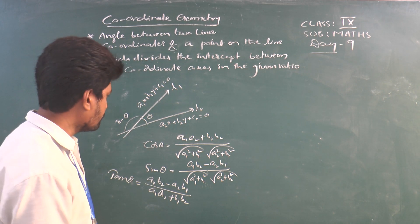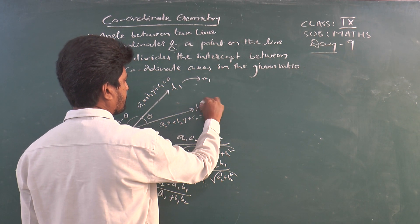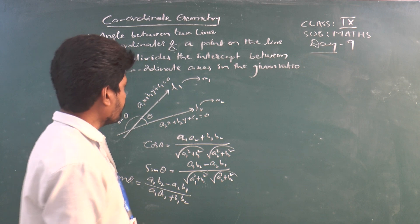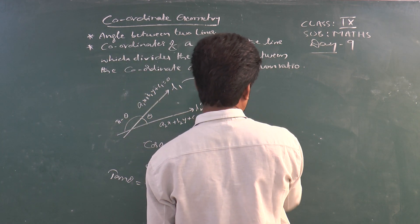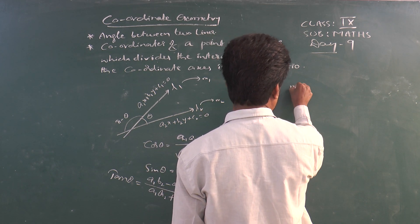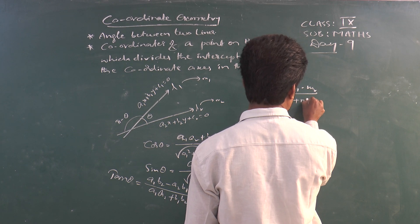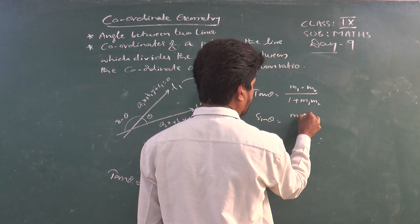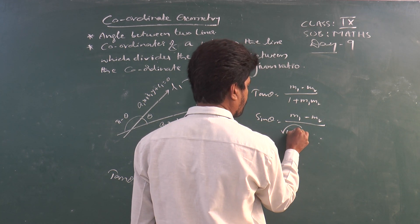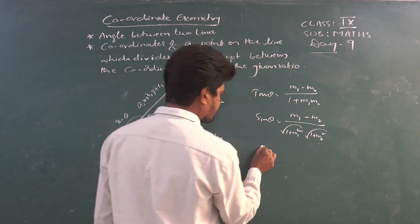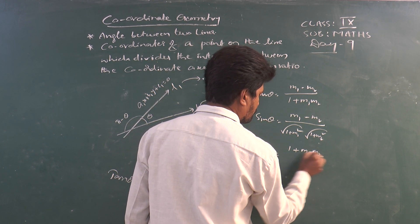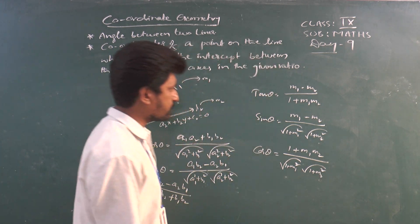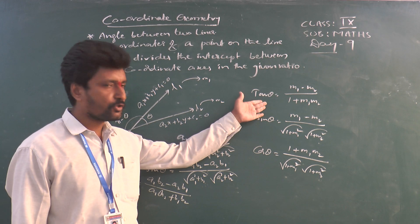If the slope of the first line is m1 and the slope of the second line is m2, we can use slope-based formulas. For tan θ: tan θ = (m1 − m2) / (1 + m1·m2). For sin θ: sin θ = (m1 − m2) divided by the square root of (1 + m1²) into the square root of (1 + m2²). For cos θ: cos θ = (1 + m1·m2) divided by the square root of (1 + m1²) into the square root of (1 + m2²).